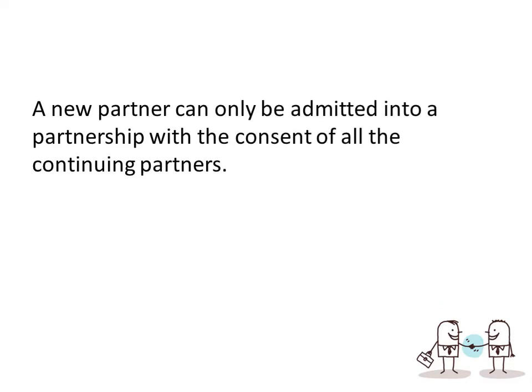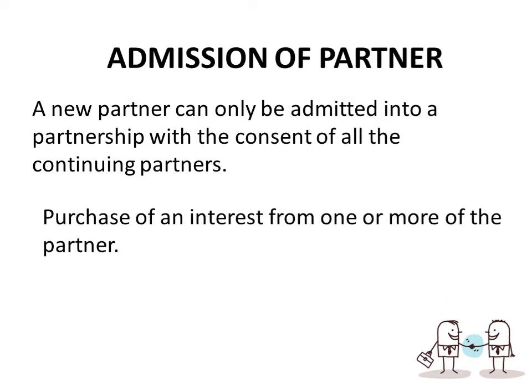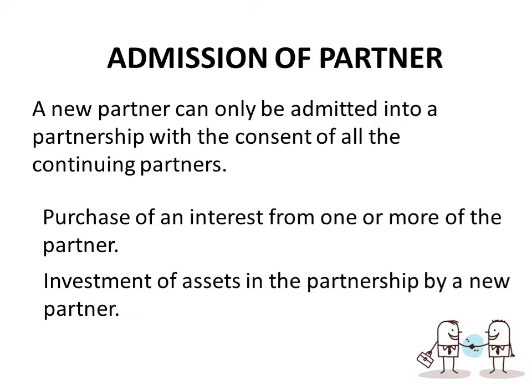A partner can only be admitted with the consent of all the continuing partners, because the partnership is built merely on trust and confidence with each other. Therefore, any admission or retirement of a partner should be consented to — every partner has to agree. The admission of a partner can be done in two ways: purchase of an interest from one partner, or investment of assets in the partnership by the new partner.